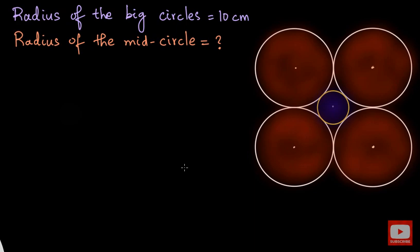Hello everyone. In this video we have four big circles that are touching each other, and we have a small circle in the middle which is touching all four circles. It is given that the radius of all the big circles, which are all equal, is 10 centimeters, and we have to find the radius of the mid circle.